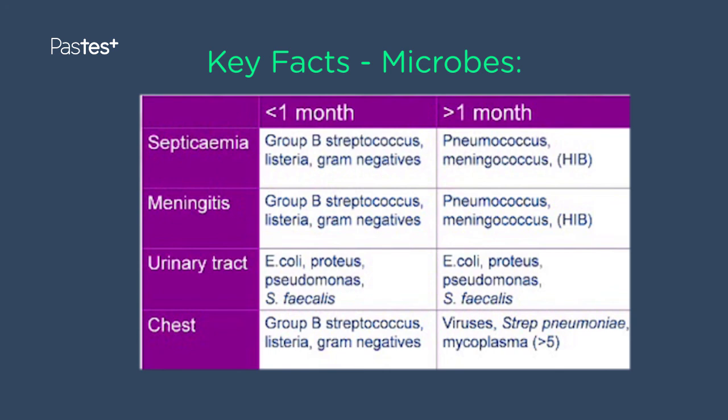The spectrum of microbes causing fever differs with age. Under one month, infections are dominated by group B Streptococcus, Listeria, and gram-negative organisms, which can cause septicemia, meningitis, and chest infections. Over one month, Pneumococcus, Meningococcus, and to some extent Haemophilus influenzae type b (Hib) become particularly important. Urinary tract pathogens are gut organisms, with E. coli being by far the most common.